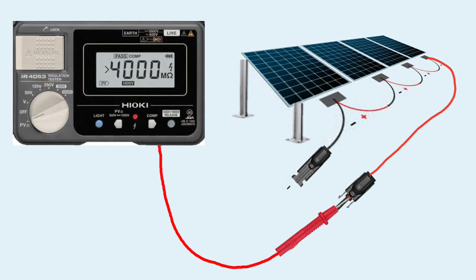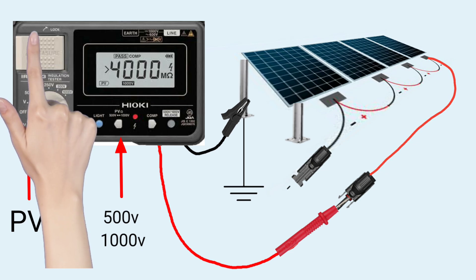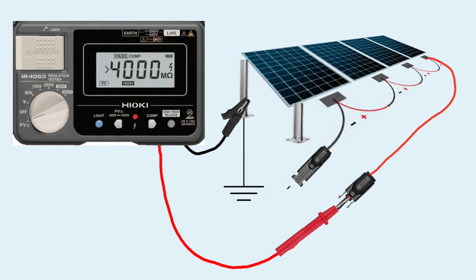Connect the positive MC4 of the PV string terminal to the red electrode of the device, and connect the black electrode to the system body earthing. Set the testing voltage at which you want to test the PV string, turn the knob to the PV resistance setting specially provided on this device, and hit the test button. The value is measured in 4 seconds and you will get the resistance value between the PV cables and the system earthing.